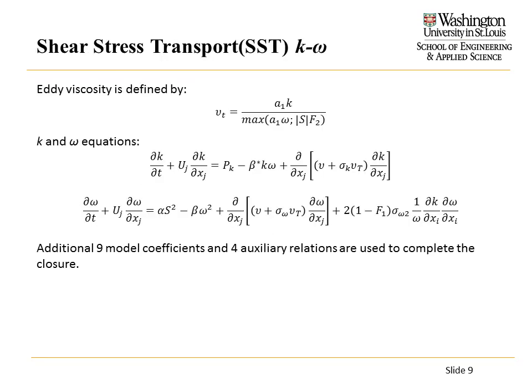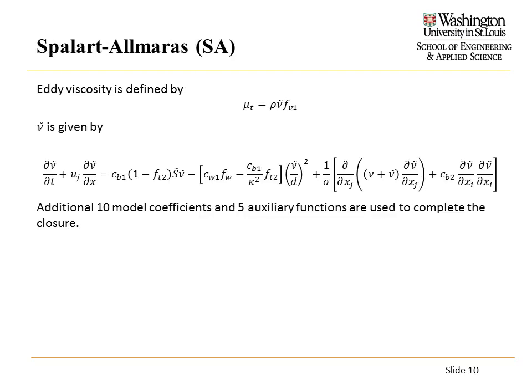To give an idea of what these equations look like: when I say two equations, it's solving two PDEs. It's like a regular transport equation — there's a convection term, diffusion, and some source and sink terms. The same applies to the Omega equation, and there are additionally nine model coefficients calibrated to simple turbulent flows and four other algebraic equations. The SST model is simpler — it's one equation with the same form of convection, diffusion, and source and sink terms, with about ten model coefficients and five auxiliary functions.